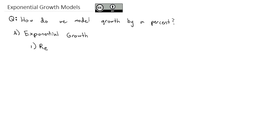If we're doing a recursive rule for that exponential growth, we'll start with P sub 0 equals the initial value, like we saw before. And then P sub n is going to be 1 plus some rate times the previous value, P sub n minus 1.